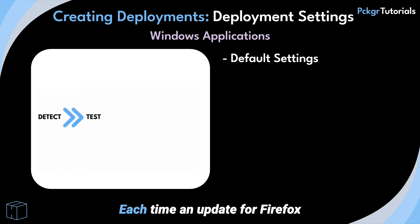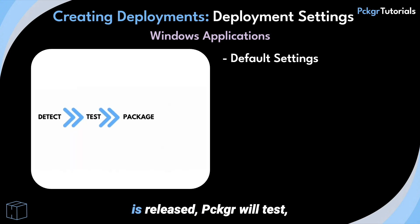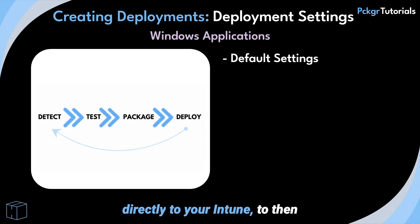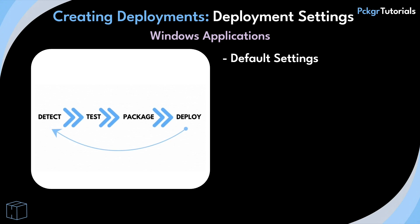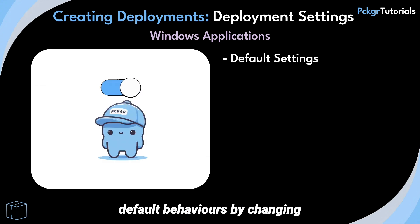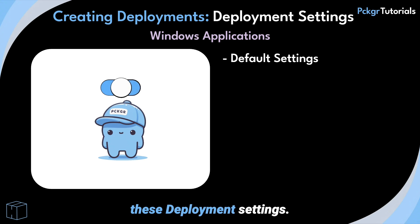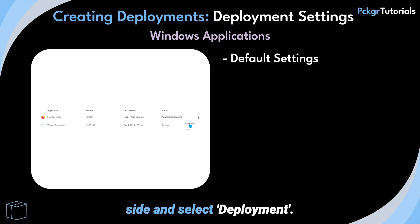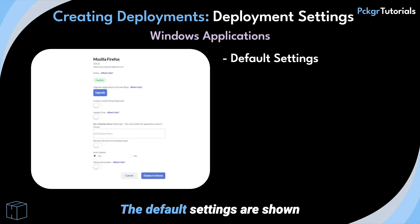Each time an update for Firefox is released, Packager will test, package, and push the new version directly to your Intune to then be deployed to your devices. Packager allows users to alter the default behaviors by changing the deployment settings. To deploy the application, click the three dots on the side and select Deployment. The default settings are shown in the following window.